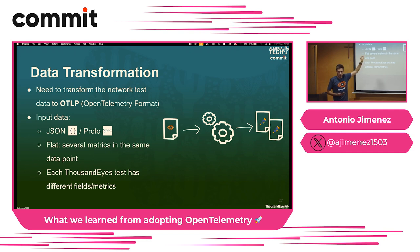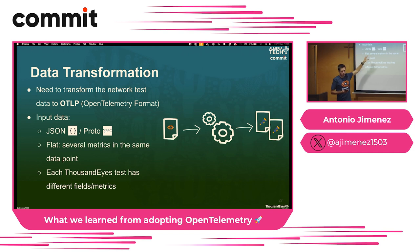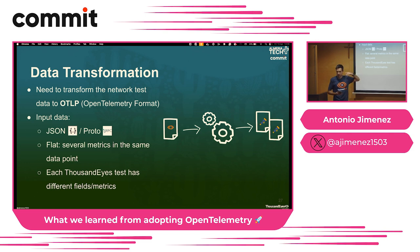We need to convert from ThousandEyes to OpenTelemetry format. Our ThousandEyes format can be JSON or Proto. We have many test types — network, HTTP, page load — each one built by a different team, each with a different way to send data through a different Kafka topic in a different format. The data is also flat: the loss, jitter, and latency metrics were all together in the same data point internally, but in OpenTelemetry a metric is just jitter or just latency — so you will have many individual ones. And of course, each test type has different metrics and attributes.